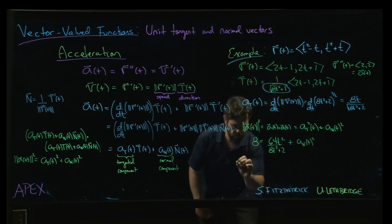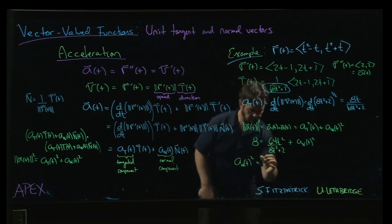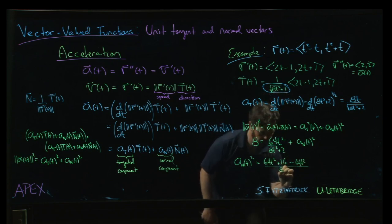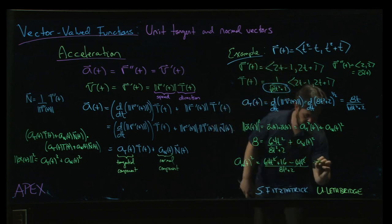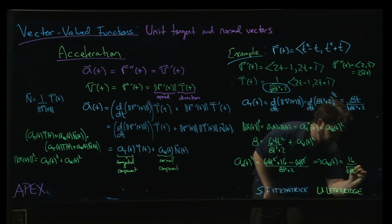And so the normal component squared is going to be 8 minus that, so we're going to get the common denominator, 64t²+16 minus 64t², all over 8t²+2, so of course those cancel, and if we take the square root, we're going to get that the normal component is 16 over the square root of 8t²+2.